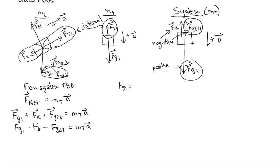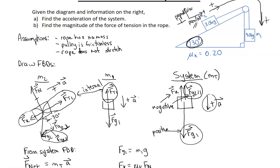FG1 is nothing new — it's acting in the positive direction, so that's M1 times G. For FK, there's something important: FK equals mu_K times FN, and FN is not equal to FG — it equals FG2 perpendicular. So FK becomes mu_K times FG2 perpendicular. Because the slope angle is 30 degrees, that same angle describes how FG is rotated from the vertical, and you can verify those angles are indeed the same by considering a very small angle case.